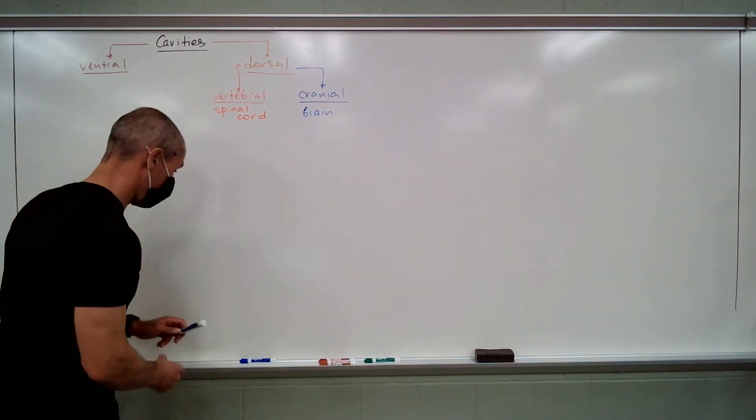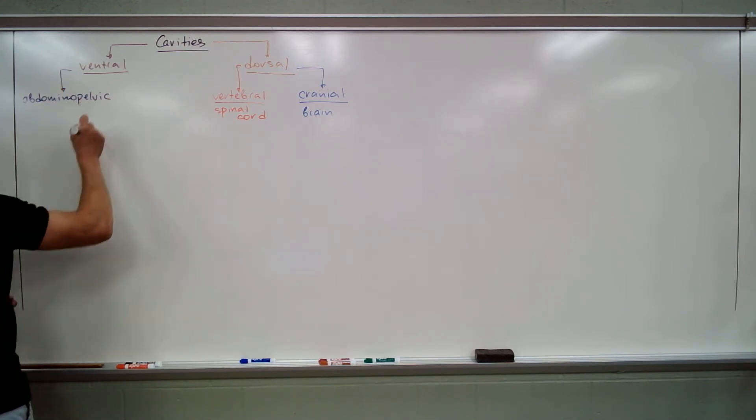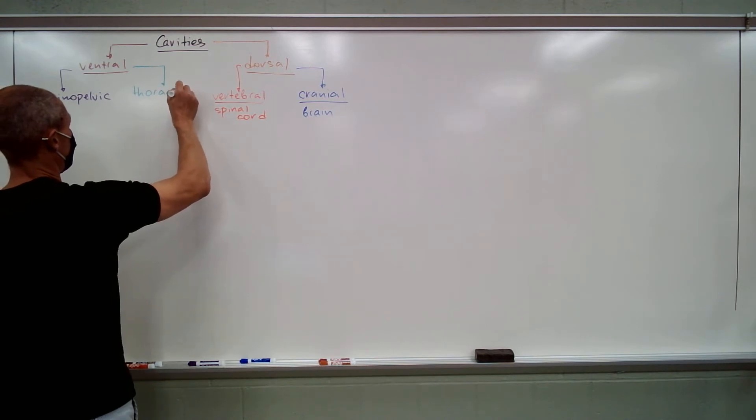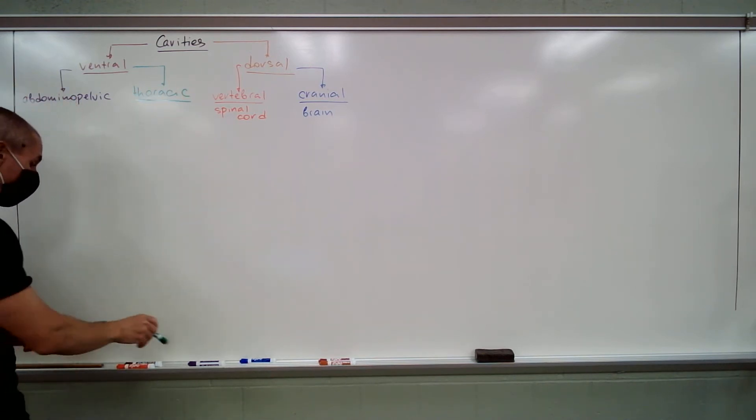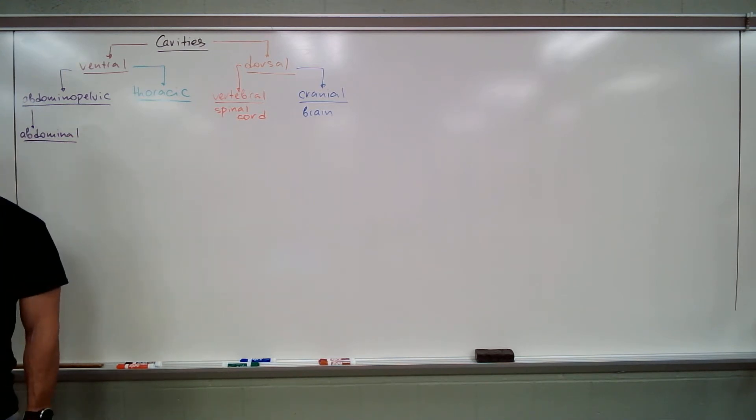Now, the ventral cavity can be further divided into abdominopelvic and thoracic. So, abdominal pelvic cavity can be even further divided into abdominal, which houses a whole bunch of organs.